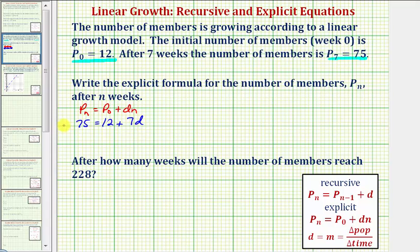Solving for d, we'd subtract 12 on both sides, giving us 63 = 7d, dividing both sides by 7. Simplifying, we have d = 63/7, which equals 9. So this is our common difference.